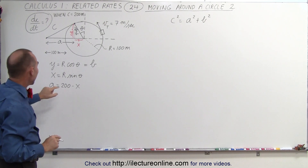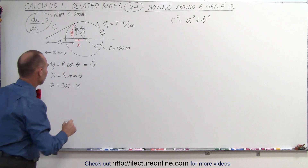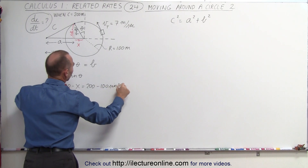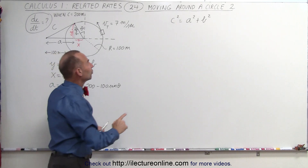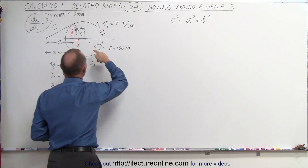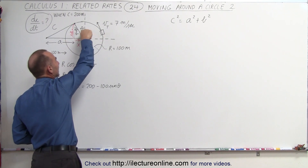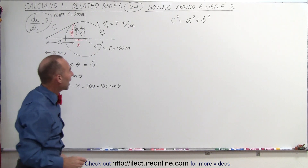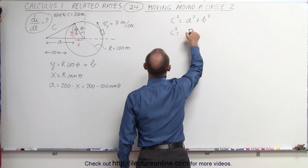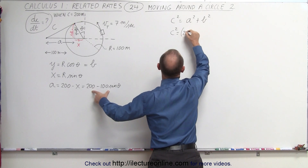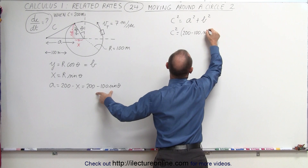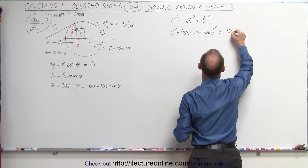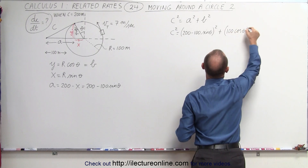We have an expression for a in terms of x, which can also be written in terms of the angle: a = 200 − 100·sin(θ). Now we're ready to plug into the equation, relating c to the angle theta. Plugging in: c² = (200 − 100·sin θ)² + (100·cos θ)², and we square both terms.